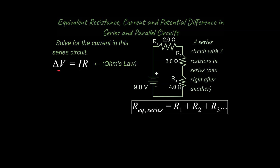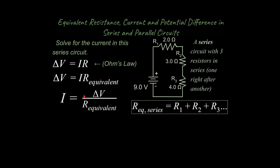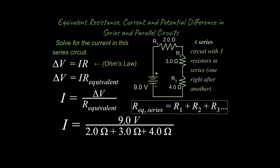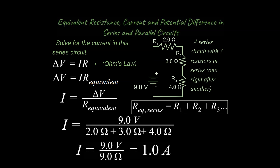Ohm's Law is something we'll be using throughout our work in circuits, so keep it handy. We're going to modify the R value — for a series circuit we need the equivalent resistance. Isolating for I, we plug in our numbers where the equivalent resistance is the sum of all individual resistors in the circuit. We end up with a current of 1.0 amps. We'll compare that to a similar circuit set up in parallel.